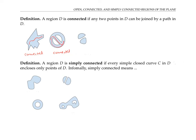This third region, however, is not connected, because it's divided into two pieces or components. And if I take a point in one of the pieces and a point in the other, there's no way to connect them with a path without going outside of the region D.